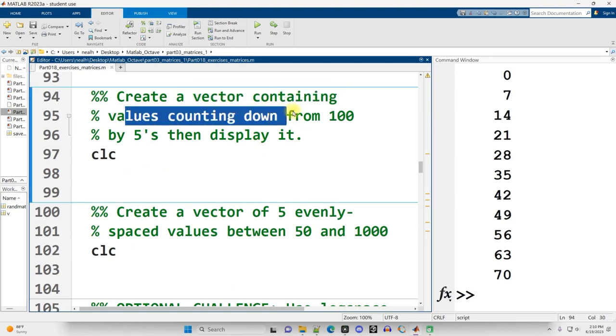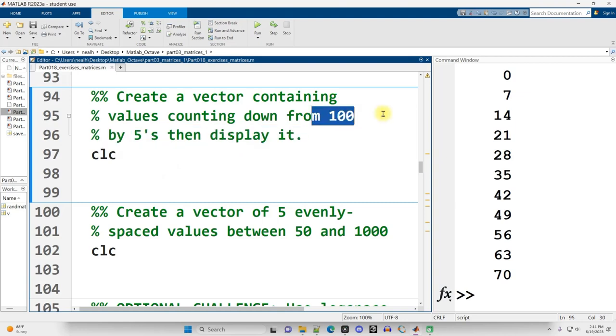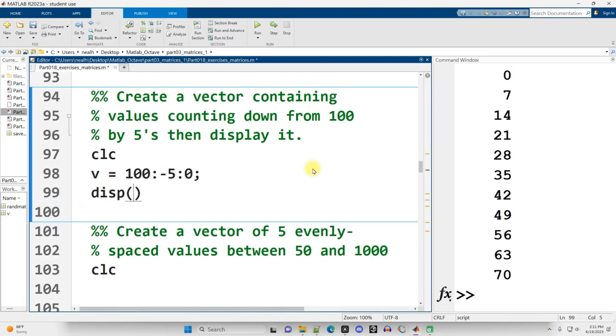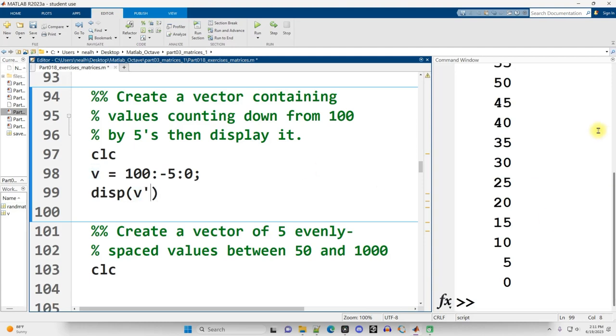Create a vector containing values counting down from 100 by fives, then display it. Now it doesn't say how far down I'm supposed to go. So let's go down to zero. That seems reasonable. So V equals 100, colon counting down by fives, colon, let's go down to zero. And then we'll display it. And again, I should have transposed it because it's easier to read. All right. And that looks correct to me.